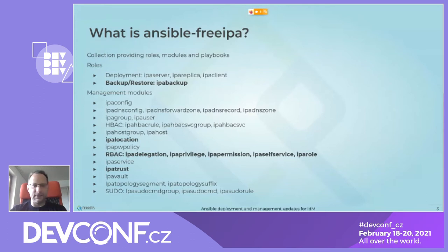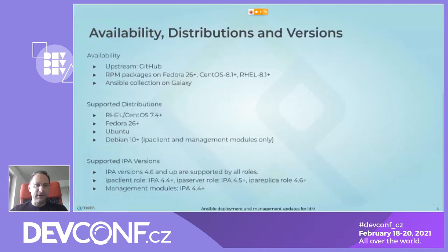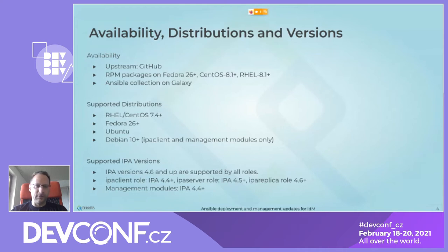Availability, distribution, and versions have not changed. We still have RPMs, a collection in Galaxy, and several supported distributions. Debian 10 server support may now be possible but needs to be verified. For all management modules, the minimum requirement is IPA 4.4. For deployment roles: server requires 4.5+, replica requires 4.6+, and client requires 4.4+. Simply put, everything with 4.6 and up is supported by all roles and modules.